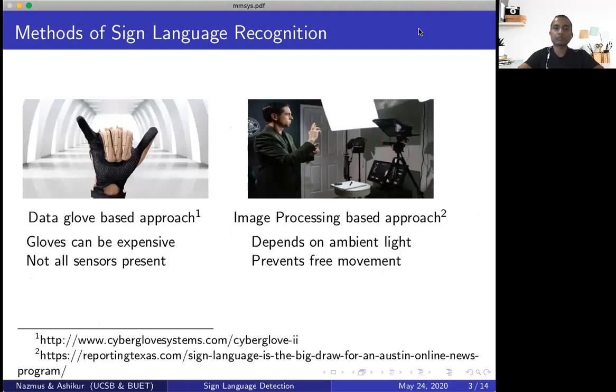There are two primary methods of sign language recognition. One is data glove based approach where a glove with a bunch of sensors is used to collect some data. The problem with this approach is that the gloves that are found commercially are expensive and not all sensors that are needed to detect a particular language are present in those gloves.